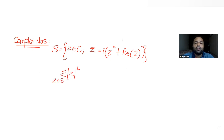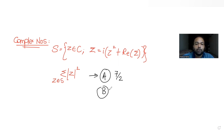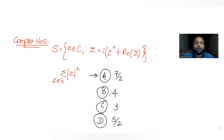The four options given are: first, seven by two; second, four; third, three; and the last option is five by two. We need to figure out which one of these four options is the correct answer.